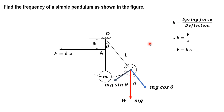The stiffness of the spring is given by the force required to produce unit deflection, so it is spring force divided by deflection. Since the deflection of the spring is x, we have k = F/x, and therefore F = kx. This spring force kx will act to bring the bob back to its original position.